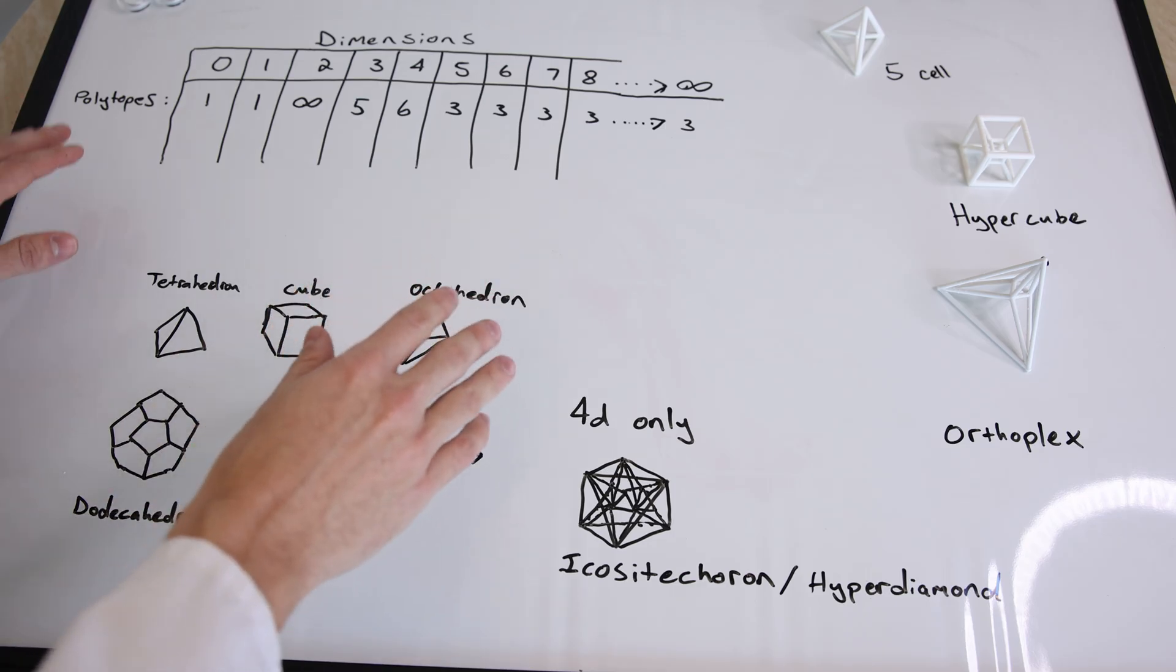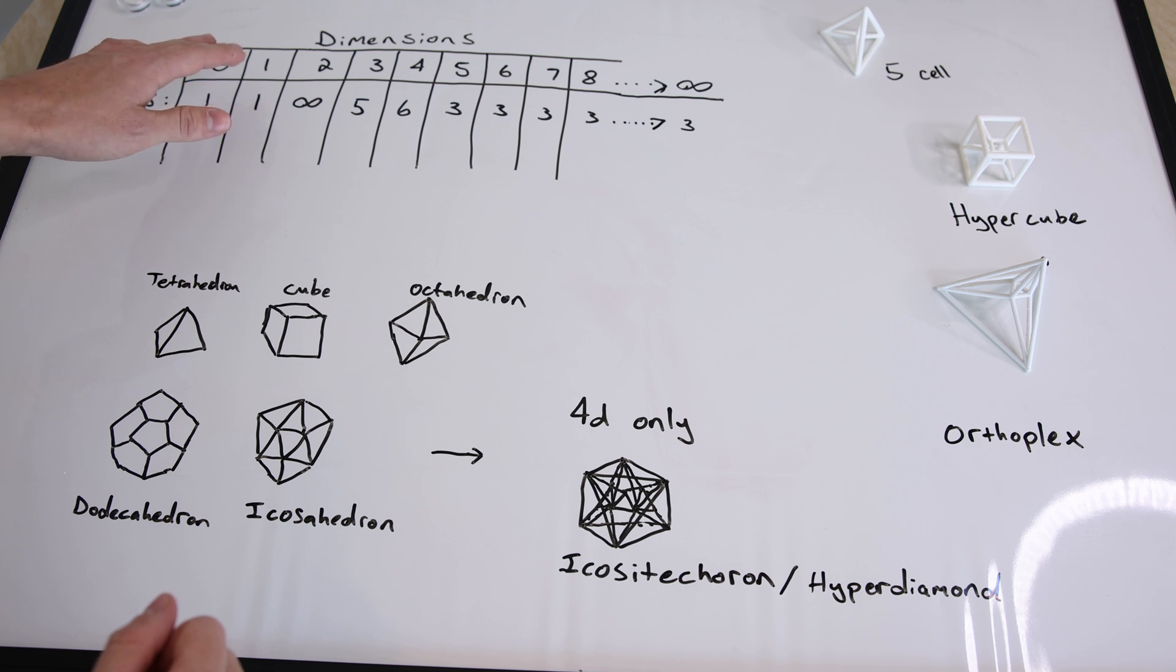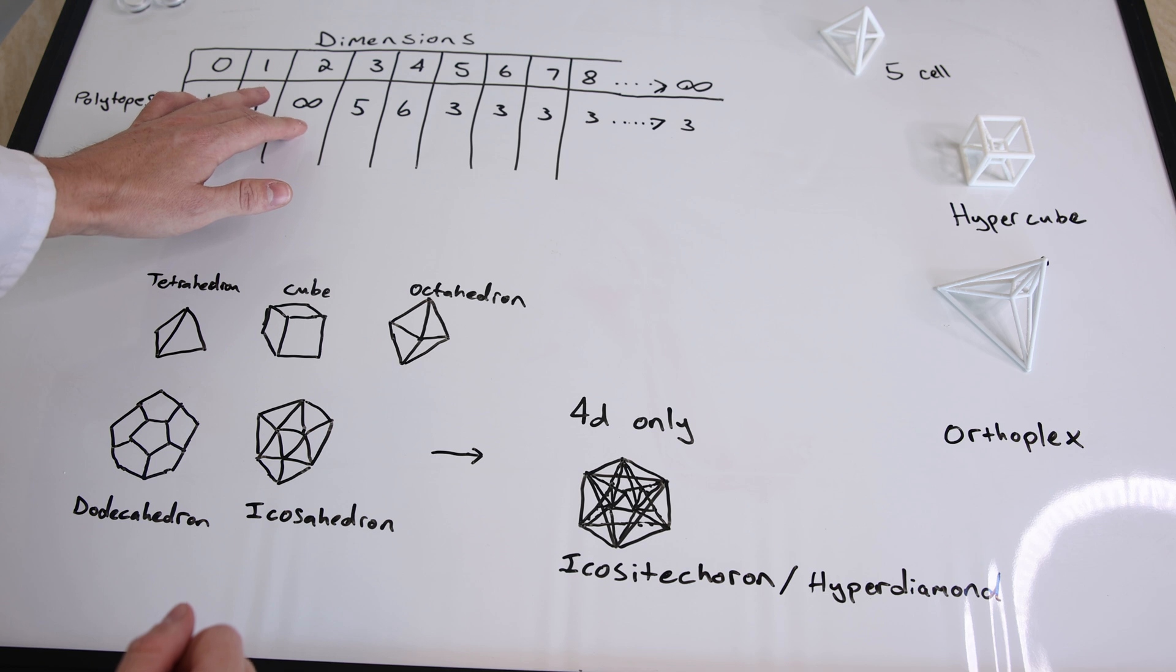Now we will go through a chart that explains which polytopes exist in which dimension. In zero dimensions we only have a point. In one dimension we have a line. In two dimensions we have an infinite amount of polytopes.